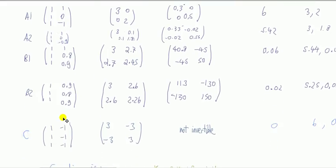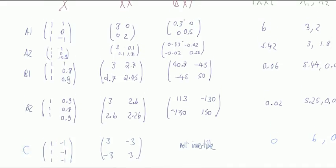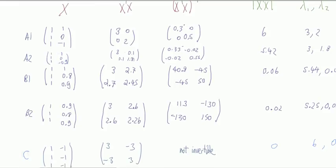Finally, case C is where you have perfect multicollinearity. Because look — one column is just a multiple of the other. Now if we try to calculate the inverse, it's not invertible. There's more than one solution. So least squares breaks down.